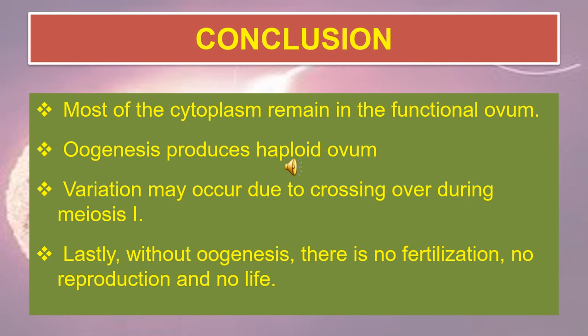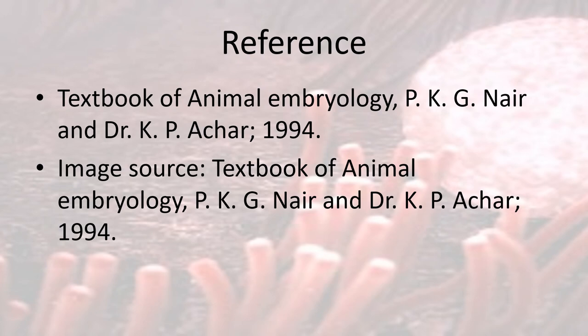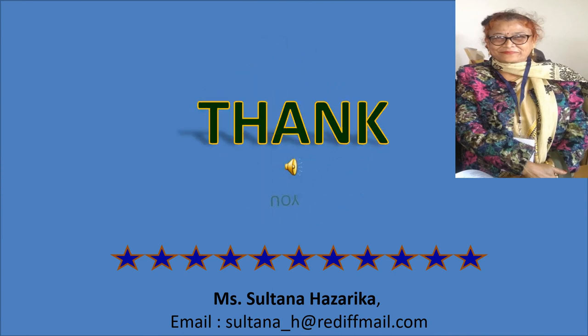In conclusion, most of the cytoplasm remains in the functional ovum. Oogenesis produces a haploid ovum. Variation may occur due to crossing over during meiosis I. Lastly, without oogenesis, there is no fertilization, no reproduction, and no life. Thank you very much for attending this lecture.